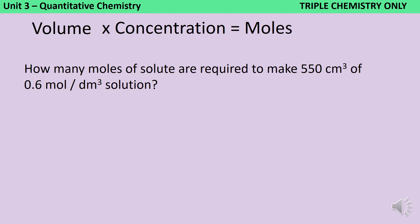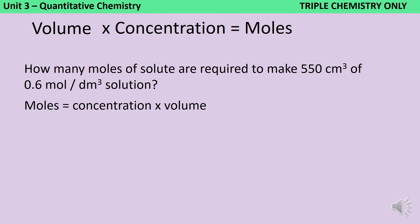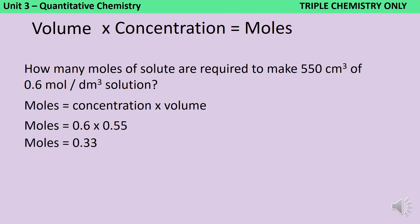So now we can answer the question: how many moles of solute are required to make 550 centimetres cubed of a 0.6 moles per decimetre cubed solution? Moles is concentration times volume, so that's 0.6 times 0.55 — because the volume needs to be in decimetres cubed. That gives an answer of 0.33 moles.